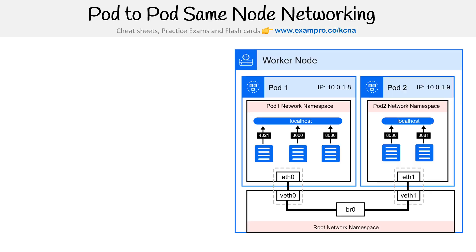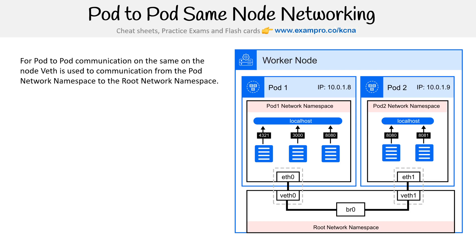I have this big fancy diagram that we'll use as a reference as we talk through the information here. For pod-to-pod communication on the same node, virtual Ethernet devices are used to communicate from the pod network namespace to the root network namespace. That's why we're talking about virtual Ethernet devices — to connect two namespaces together. I named them here like EF0 and EF1, which are still virtual.